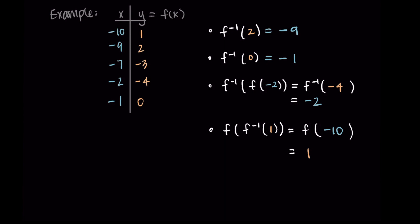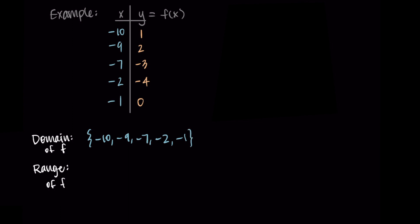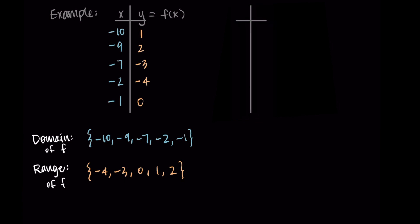When we take a function and compose it with its inverse, it effectively does nothing to the value. Before moving on, I want to talk about the domain and range of function f and its inverse. The domain of f is {−10, −9, −7, −2, −1} — just the input values — and the range is the output values ordered least to greatest: {−4, −3, 0, 1, 2}.